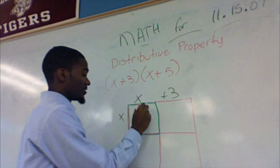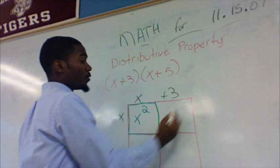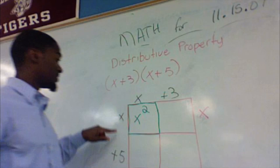This box over here, we know the length is 3 and the width is also x, which we get from right here. And 3 times x is 3x.